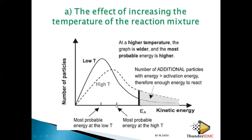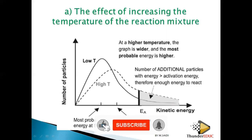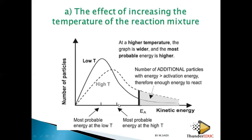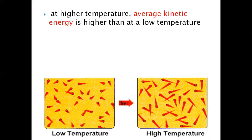At low temperature, the particles have lower energy. At higher temperature, the energy increases — for example, if low temperature corresponds to a most probable energy of around 8 units, at higher temperature it might be around 12 units. So at higher temperature the average kinetic energy is greater than at low temperature.